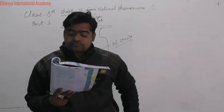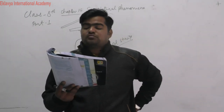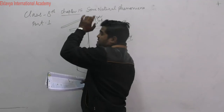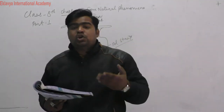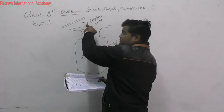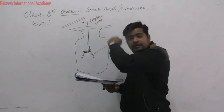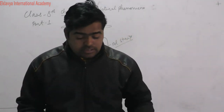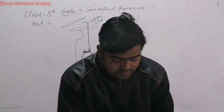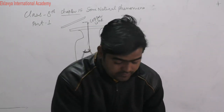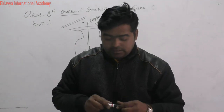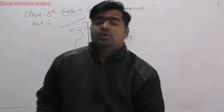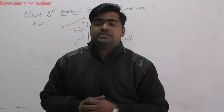When a positive charge object is drawn closer to the electroscope, the opposite effect is observed. This is all about Chapter 15 that we have started today. We will discuss this chapter further in the next period. That is enough for today — thank you, have a nice day.